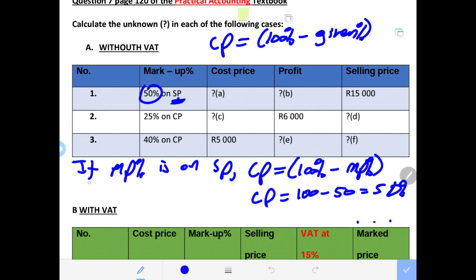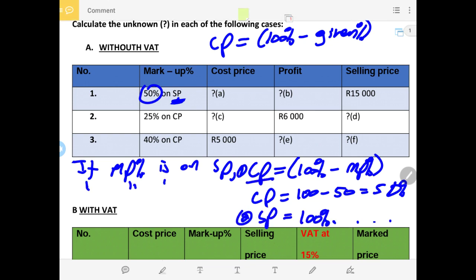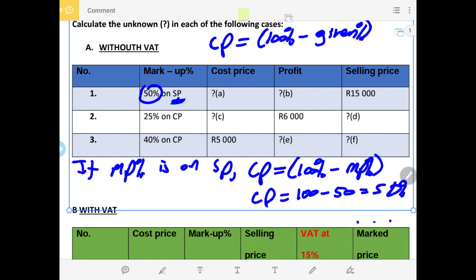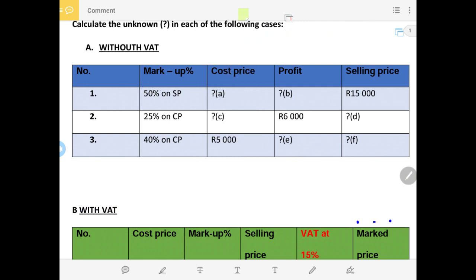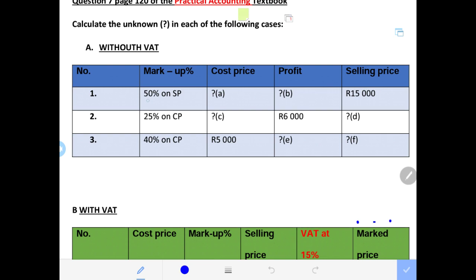We can apply the same rule. If markup percentage is on selling price — that is alternative number one — the cost price percentage is 100% minus MP%. Then we go to alternative number two: if markup percentage is on selling price, selling price is equal to 100%. These are the two very important scenarios. In this case with 50% markup on selling price, our cost price percentage in this scenario will be 50%. Remember, 50% is not the final answer but the percentage that helps us in the calculation of cost price.